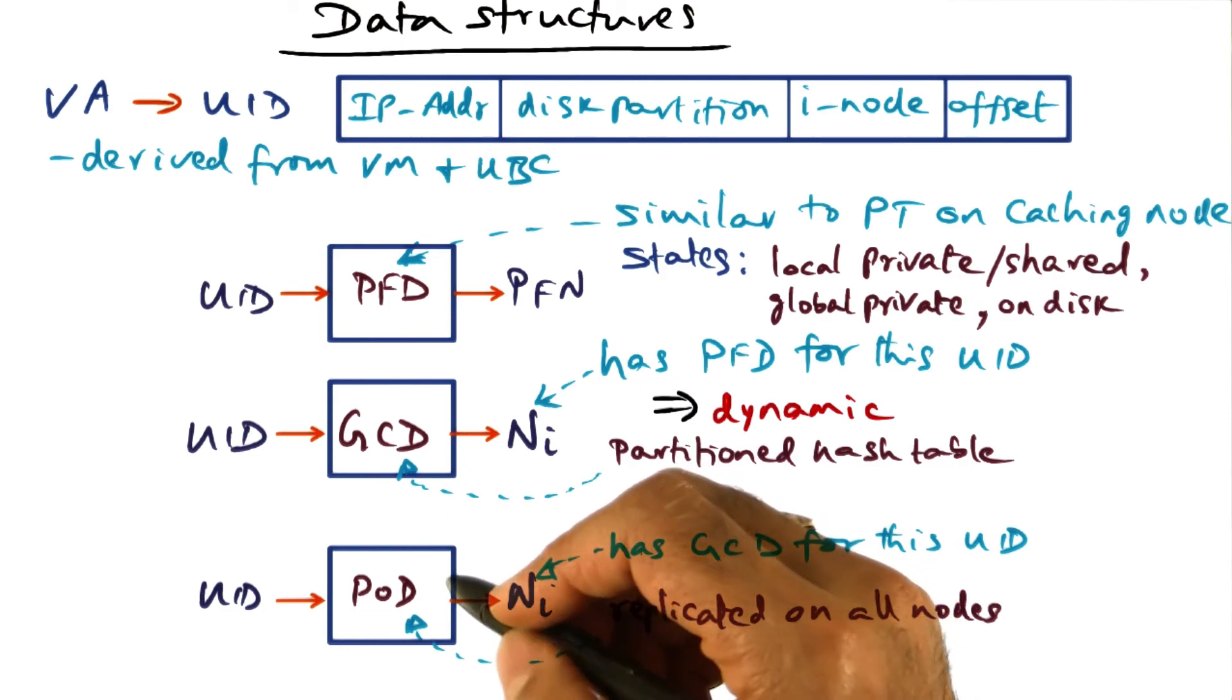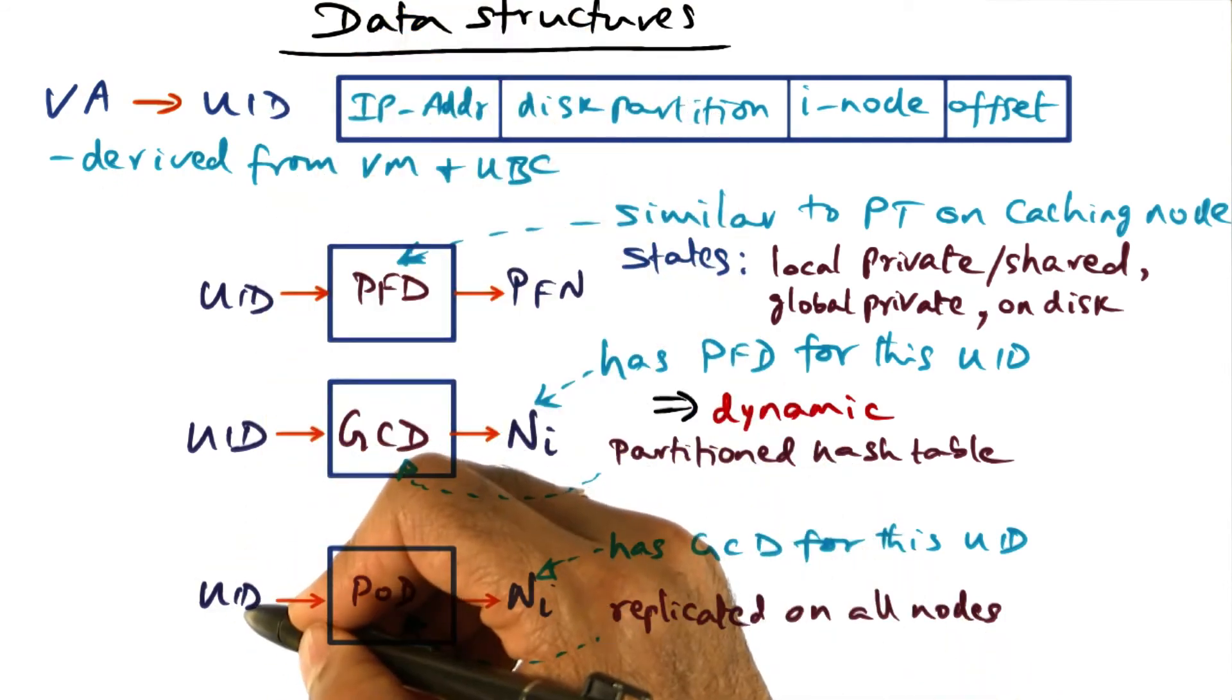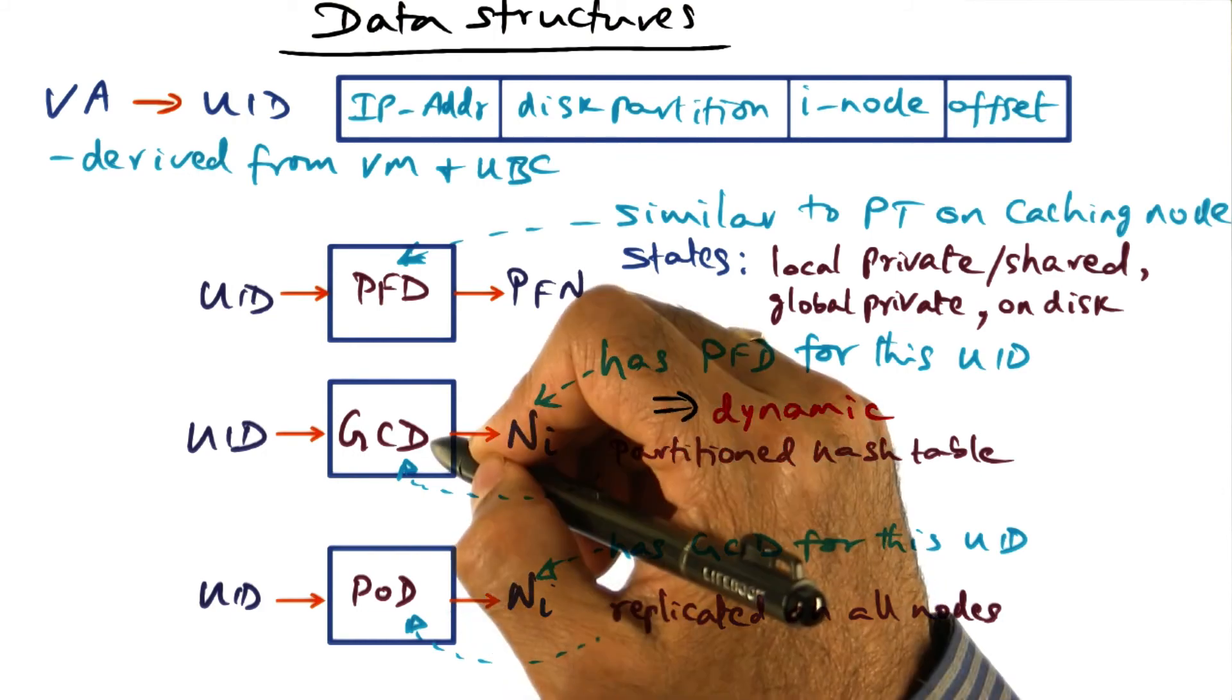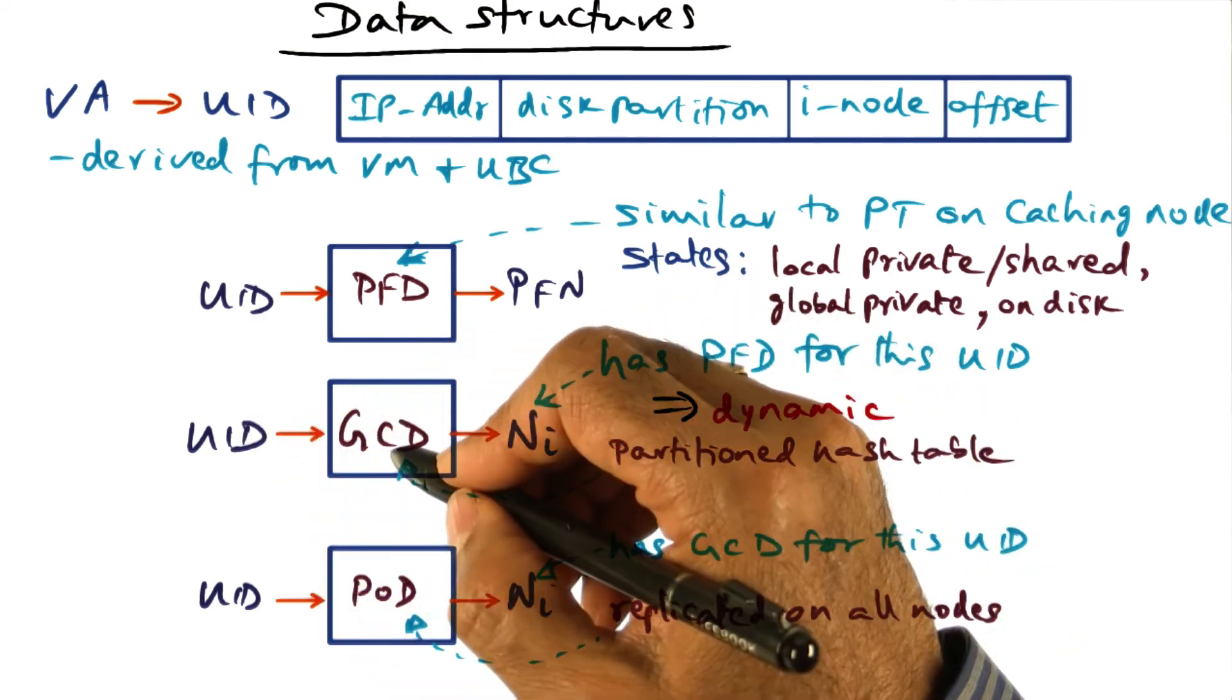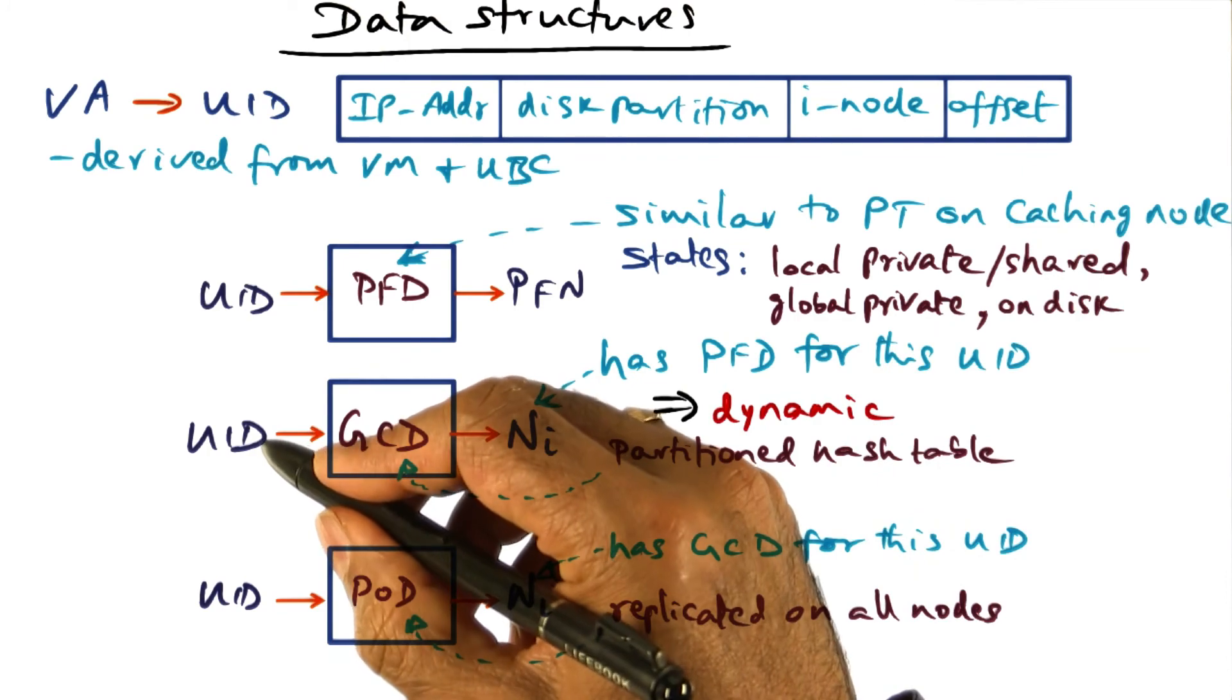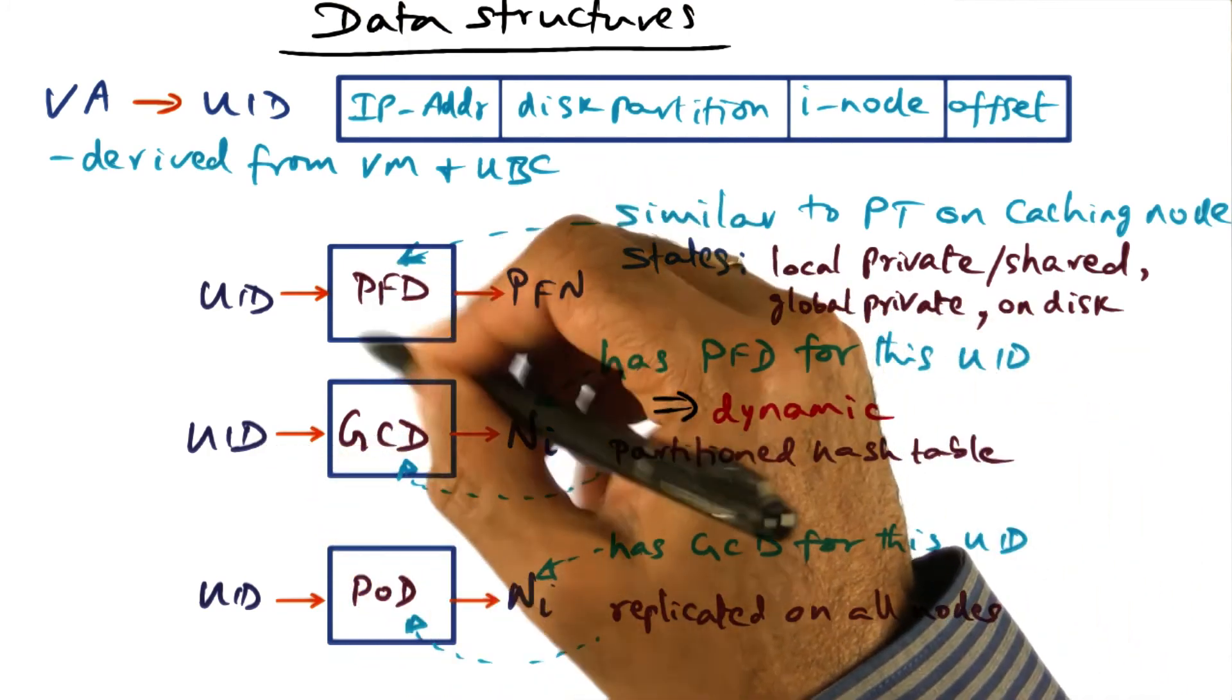So the path for page fault handling is, if you have a page fault, you convert your VA to UID. And once you have this UID, then you can go to your page ownership directory that's on your node and ask the question, please tell me who has the PFD that corresponds to this UID. And GCD is going to tell me, oh here is the node that contains the PFD for the UID that you're looking for.